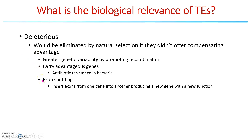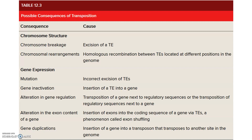Another advantage proposed is exon shuffling — a transposable element carries an exon from one gene and inserts it into a new gene, creating a new protein with a new function, giving an advantage to the host genome. However, there are negative consequences too: transposable elements can cause chromosomal breakage, rearrangements, mutations, and duplications. These tend to be rare, but can be triggered by radiation, mutagens, or hormone stimulation, making transposition a carefully regulated process.